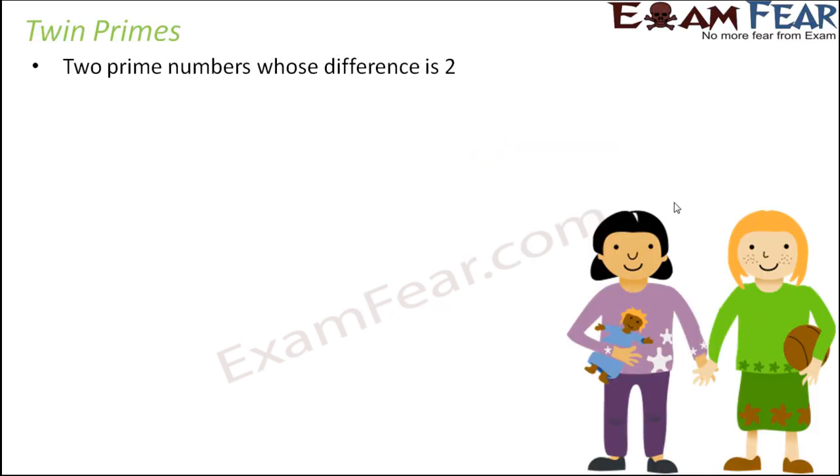Let us look at another cute set of numbers called twin primes. Now do you know what are twins? Who are twins? Siblings who are born together, they look identical to each other. They are called twins.